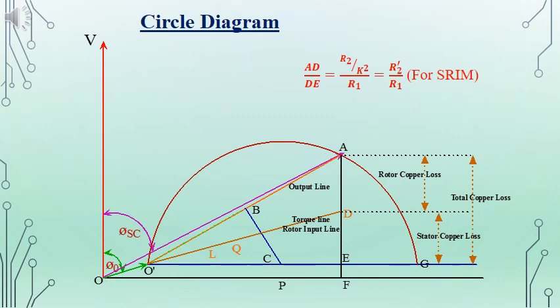The line O'D is called the torque line or rotor input line. The line O'A is called the output line.